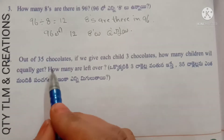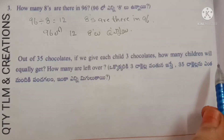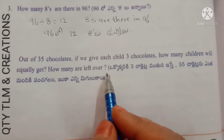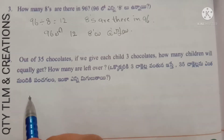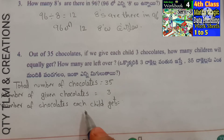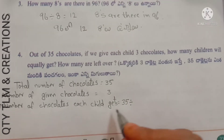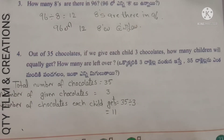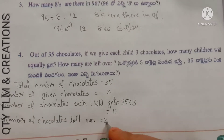Next question: out of 35 chocolates, if we give each child 3 chocolates, how many children will equally get chocolates and how many are left over? Total chocolates = 35. Chocolates per child = 3. Number of children = 35 divided by 3 = 11 children. Number of chocolates left over = 2.